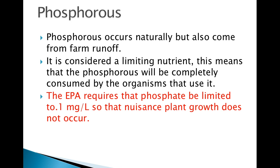Phosphorus occurs naturally, but is also a main component in fertilizers used in farming. It is considered a limiting nutrient, as its availability directly limits the amount of plant biomass that can be produced. Typically, phosphorus levels are below 0.01 mg per liter. The EPA requires that phosphate be limited to 0.1 mg per liter to prevent nuisance algal blooms.